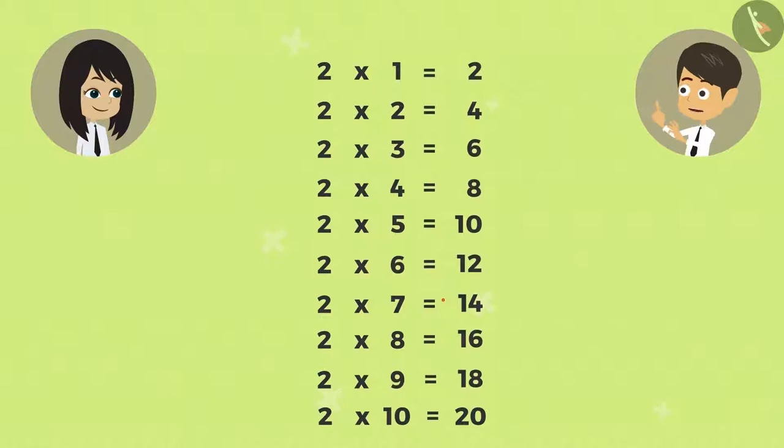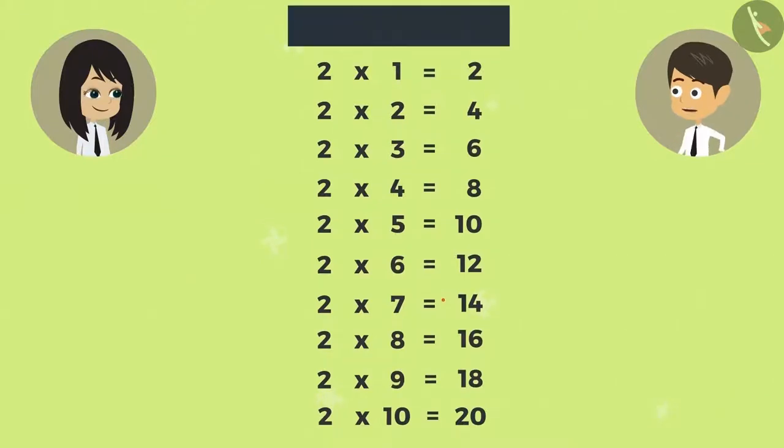Like a Multiplication Table of 2 is: 2 ones are 2, 2 twos are 4, 2 threes are 6, 2 fours are 8, 2 fives are 10, 2 sixes are 12, 2 sevens are 14, 2 eights are 16, 2 nines are 18, 2 tens are 20.